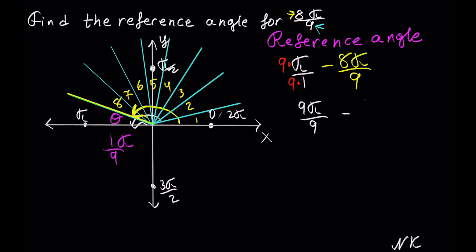We can bring this under a common denominator of 9. We have 9π from the first fraction minus 8π from the second fraction, and 9 minus 8 gives us 1π out of 9, and this is our solution. That's all.